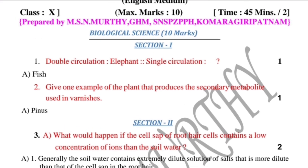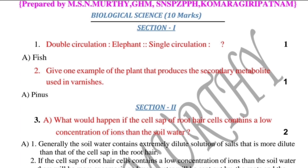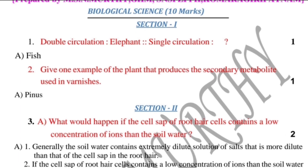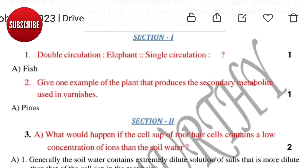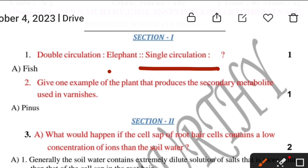First question: double circulation — elephant; and single circulation — fish. So the answer for single circulation is fish.